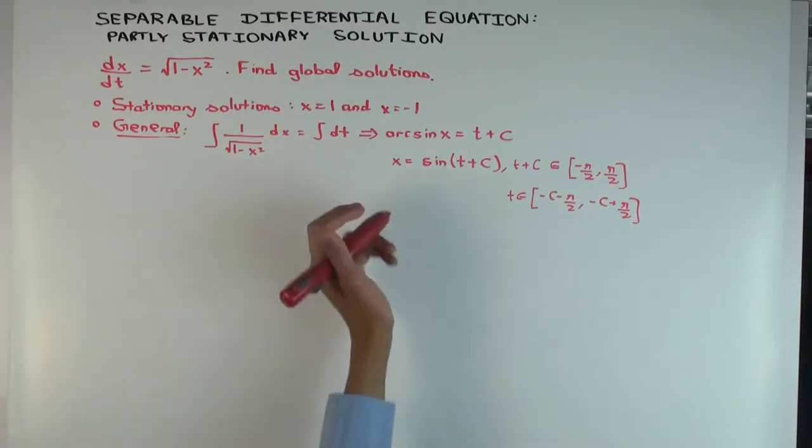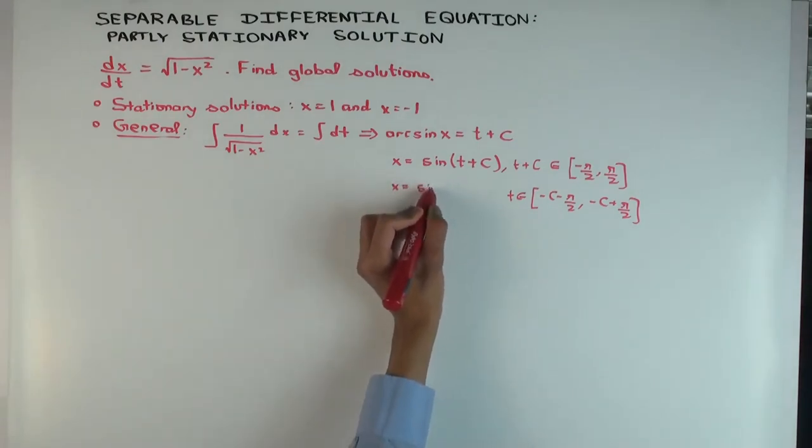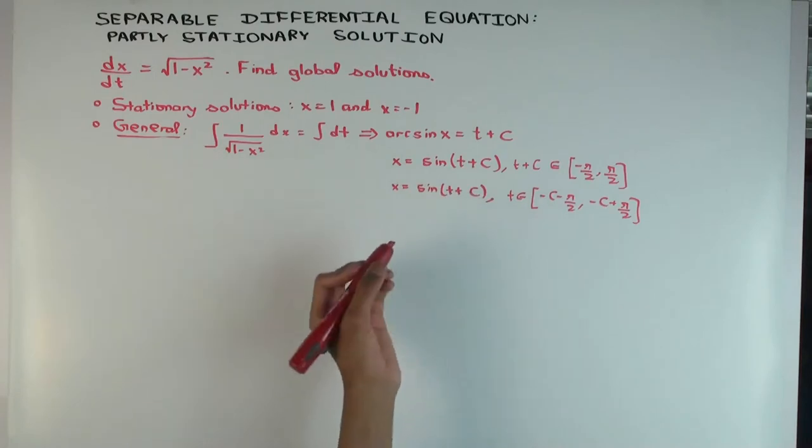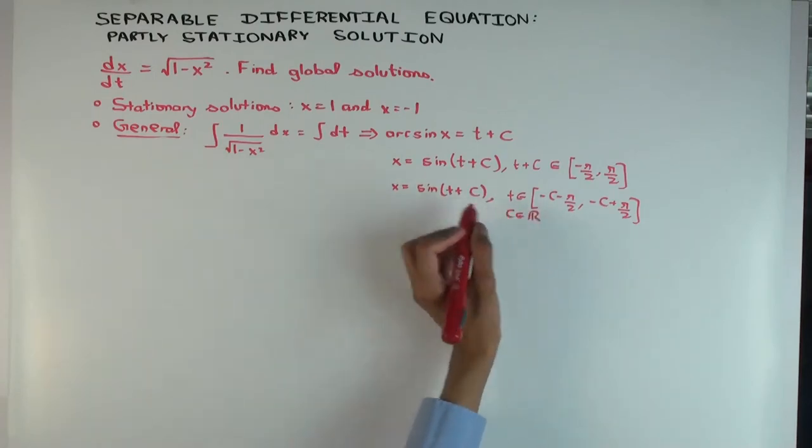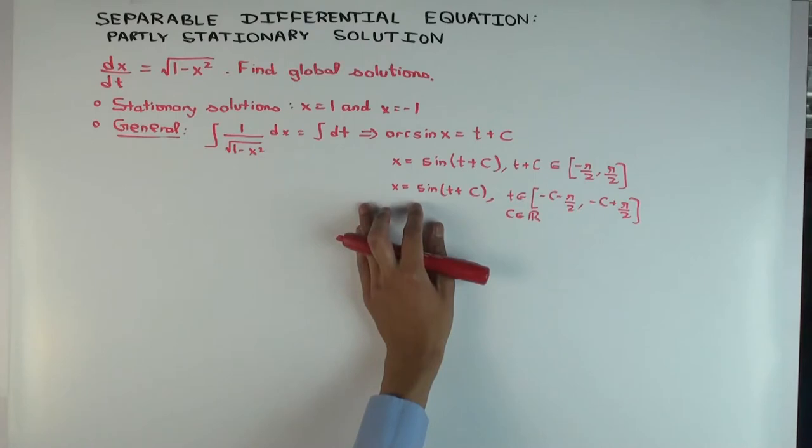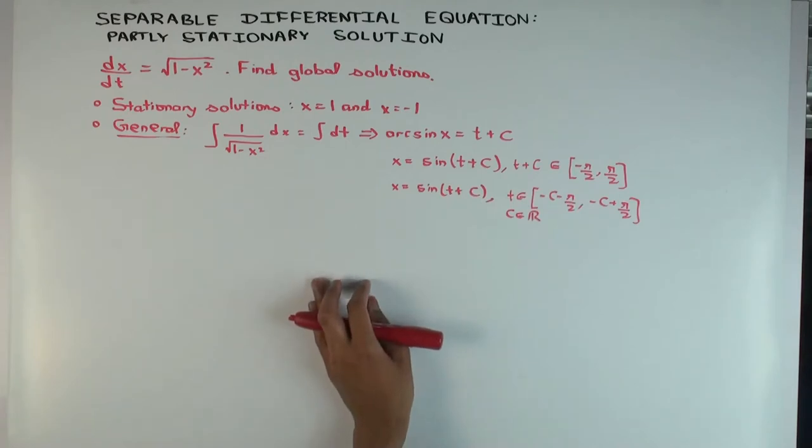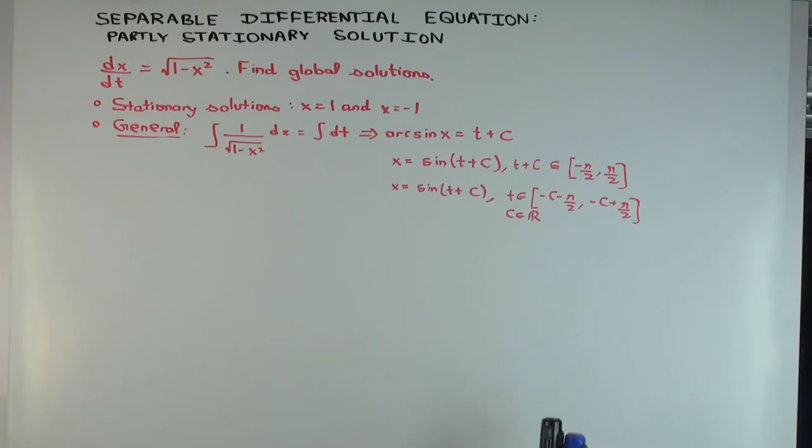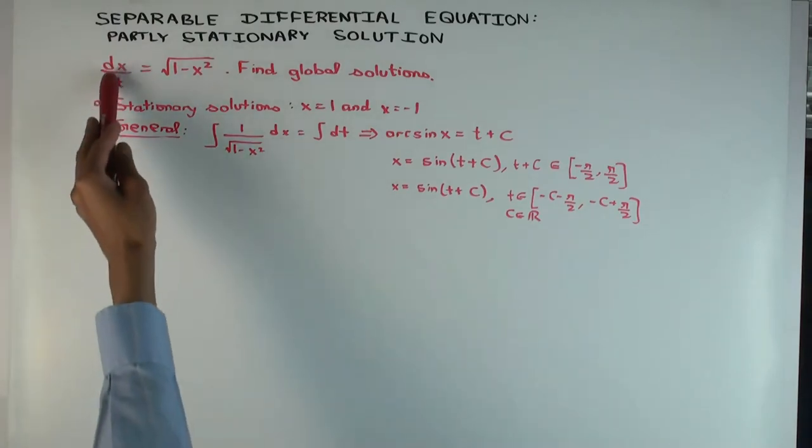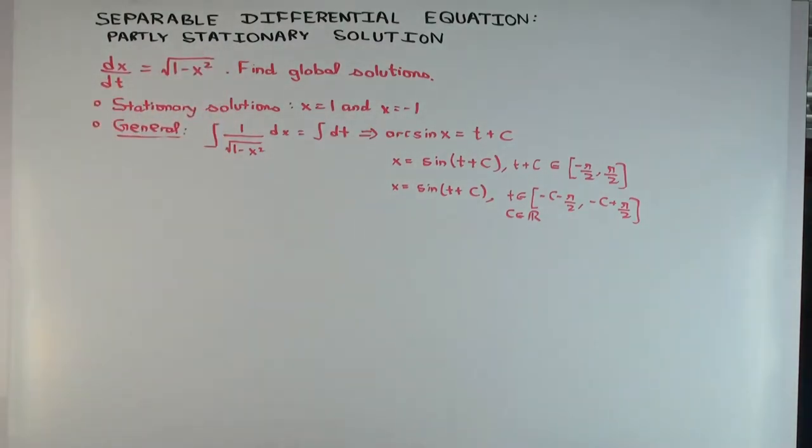Okay, so we have actually, so x = sin(t + c). So for any c in ℝ, we have a solution. So c is in ℝ. For any fixed c, you have a solution, where x = sin(t + c). Okay, and that solution is valid in a closed interval. Now what happens beyond -c + π/2? What happens beyond this end point? What does the function look like? It repeats. Well, think about it like this. So this function, the derivative of the function is √(1 - x²). Let's make a couple of observations.